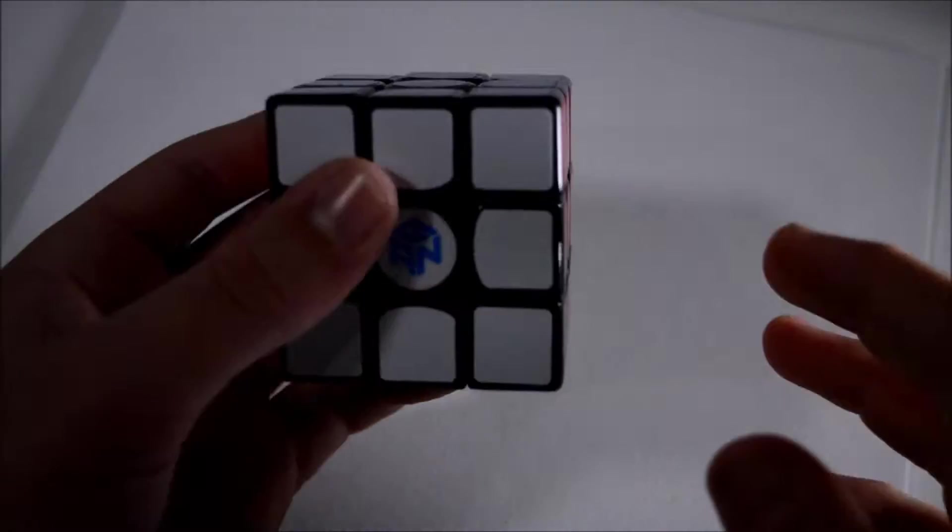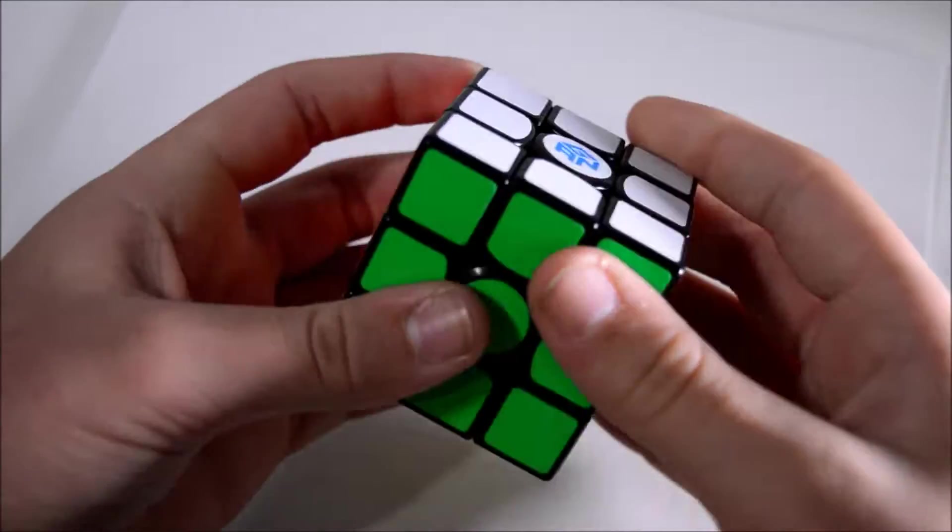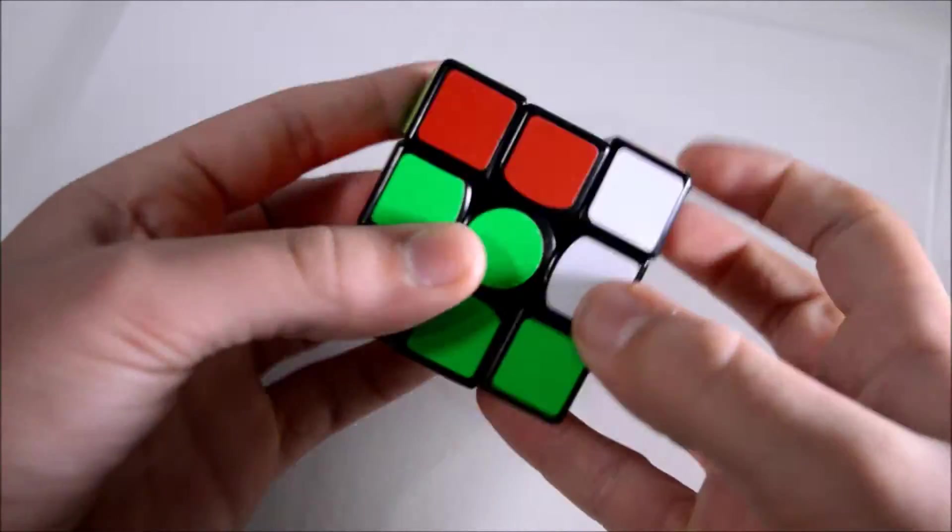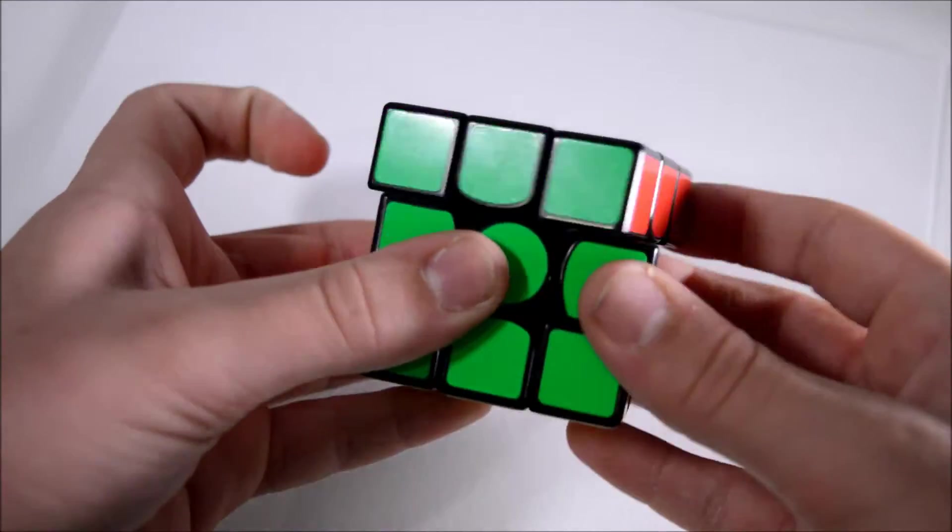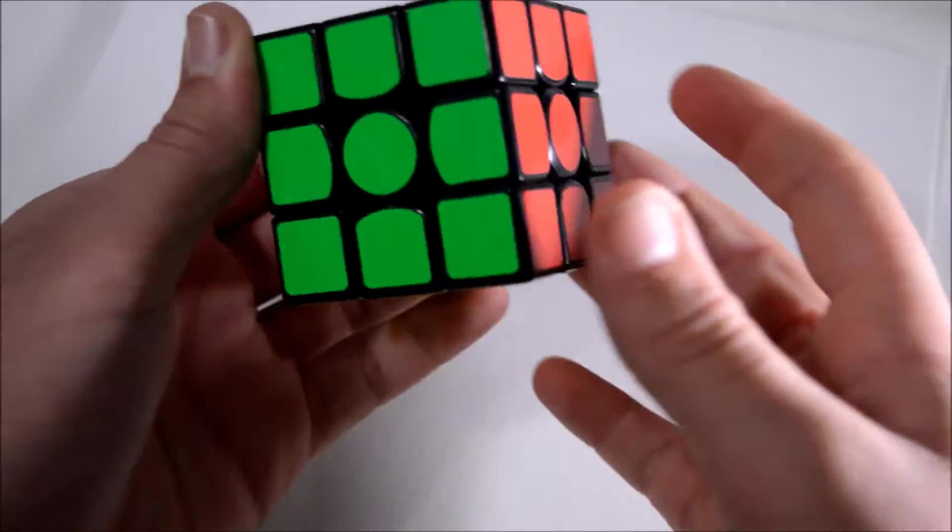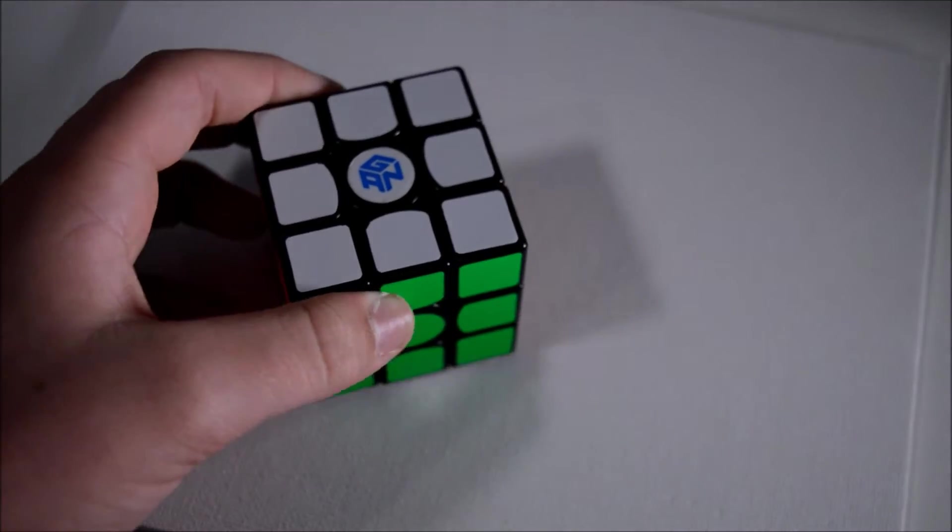The first thing that you're obviously going to need is your Gans Air. I've had this cube for quite a while and I liked it just regularly. I used it as my main for about a month but then it started locking up a lot on me. I think it was due to inaccurate turning so I think that magnets should make this a lot better.